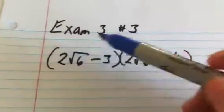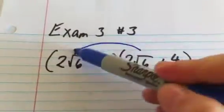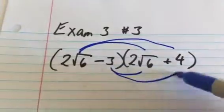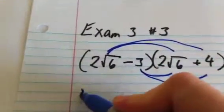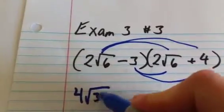To distribute here, or to FOIL, these guys and then these guys. So 2 root 6 times 2 root 6 is going to be 4 root 36.